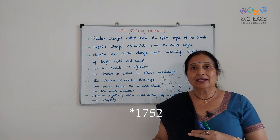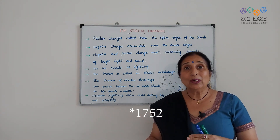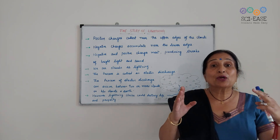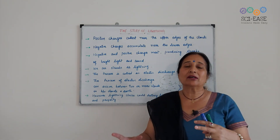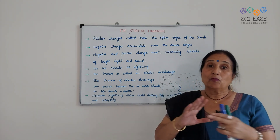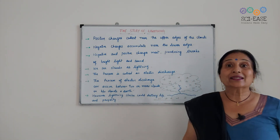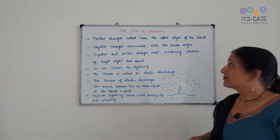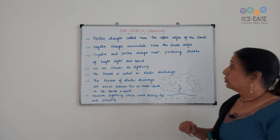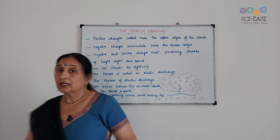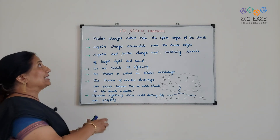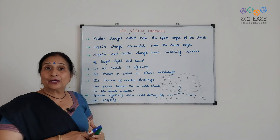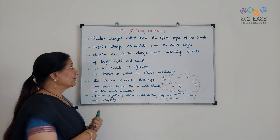Benjamin Franklin told us that there is the production of charges when two things rub together. So here is the story of the lightning — how this lightning is produced, I am going to tell you.